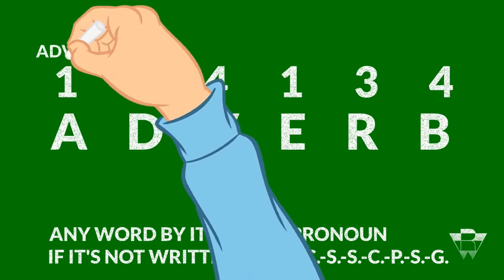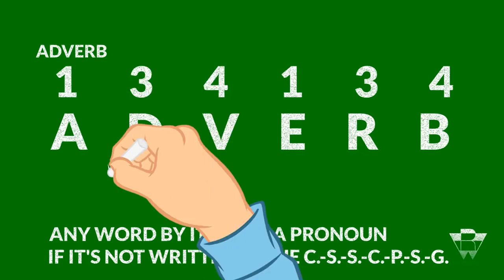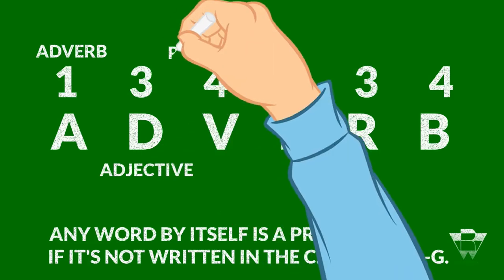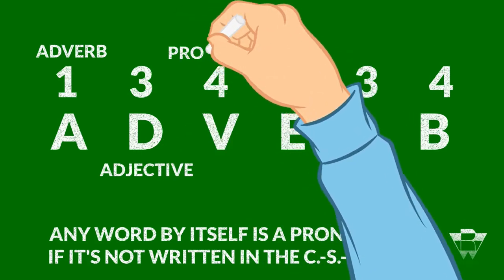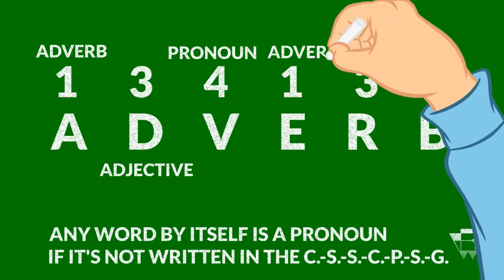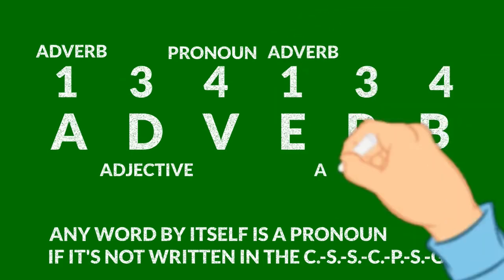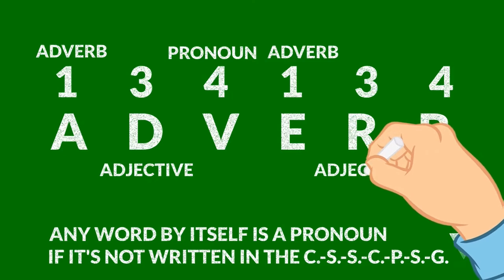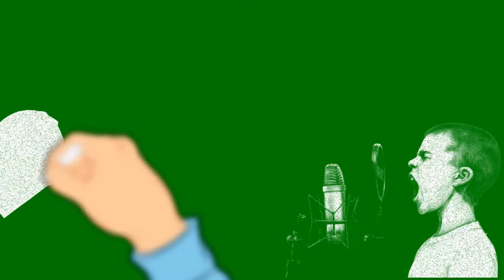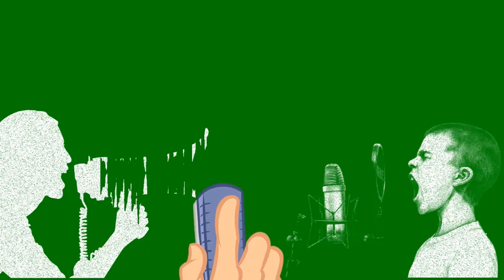When you look at the word that way, all of a sudden A becomes an adverb, D becomes an adjective, V becomes a pronoun, E becomes an adverb, R becomes an adjective, and B becomes a pronoun. In these scenarios, vowels are syntaxed as non-tangible contract words, as non-fact-based terms.